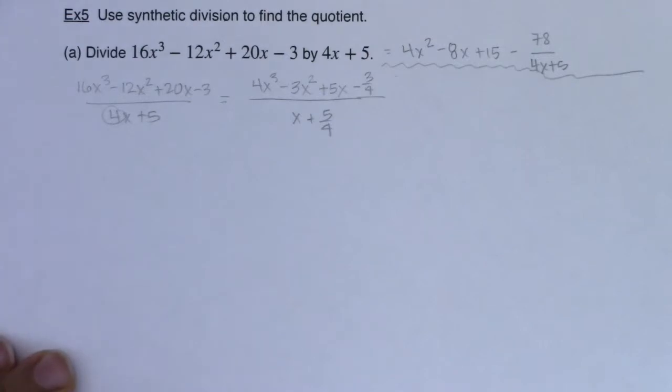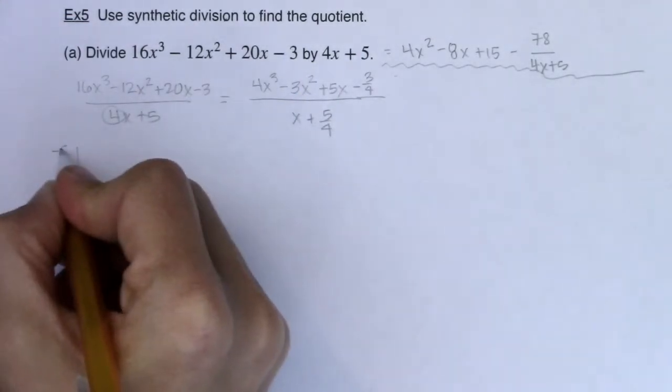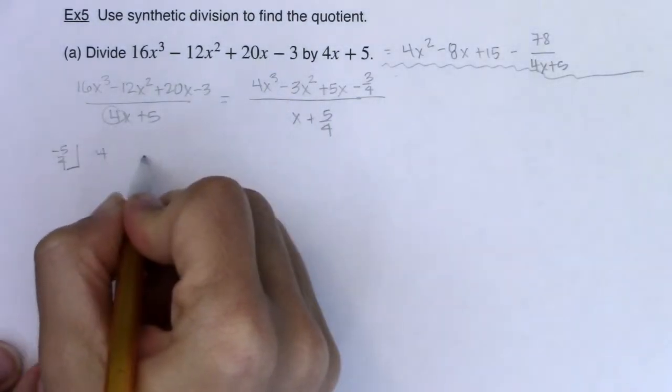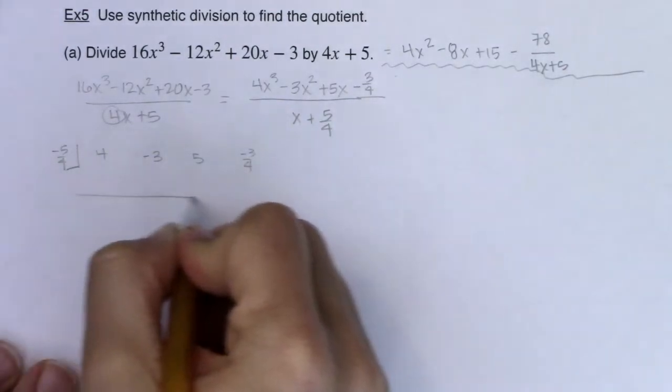We're going to do a skipped over when we get to part b here. So I'm going to put negative 5 fourths here. All right, and I have coefficients of 4, negative 3, 5, negative 3 fourths, and here we go.